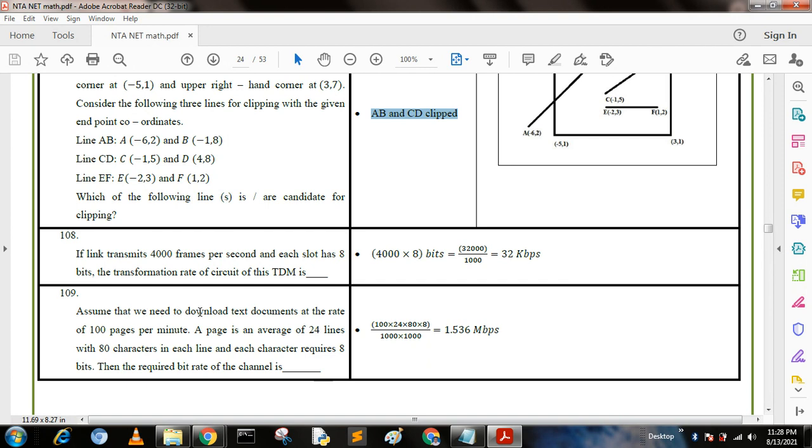Next question: Assume that we need to download text documents at the rate of 100 pages per minute. A page is an average of 24 lines with 80 characters in each line, and each character requires 8 bits. What is the required bit rate of the channel? We calculate 100 times 80 times 24, then convert to bits by multiplying by 8. We get the bits and divide by 1000 to get kilobytes, then divide by 1000 again to get megabits. After solving we get 1.536 megabits per second. This question is asked in most of the previous years, so just follow it.